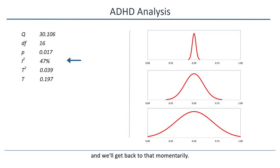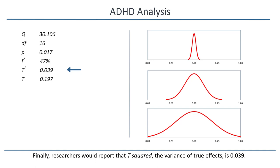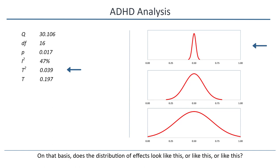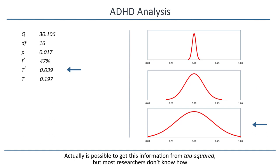And finally, researchers would report that tau-squared, the variance of true effects, is 0.039. On that basis, does the distribution of effects look like this, or like this, or like this? Actually, it is possible to get that information from tau-squared, but most researchers don't know how.